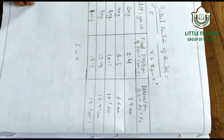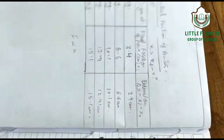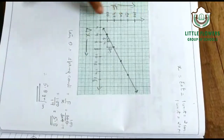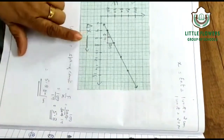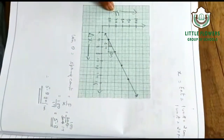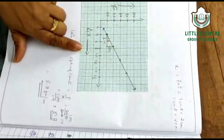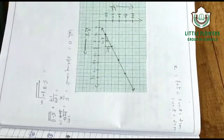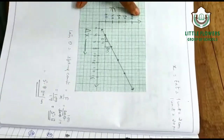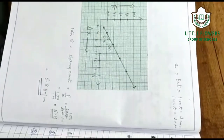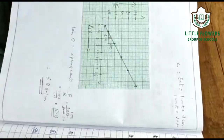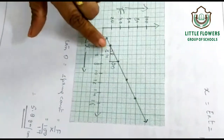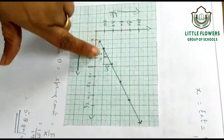We have learned that F is directly proportional to x, so let us plot the graph. On the x-axis we take the extension, and on the y-axis we take the force. The scale is: one unit on the x-axis represents 2 cm, and one unit on the y-axis represents 20 grams. After plotting the points from the observation table, we get a straight line, which verifies Hooke's Law.